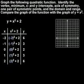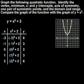Now, setting up a coordinate system, we graph the ordered pairs from the table: negative 2, 6; negative 1, 3; zero, 2; 1, 3; and 2, 6. And connecting the points, we have a smooth U-shaped curve, which is called a parabola.